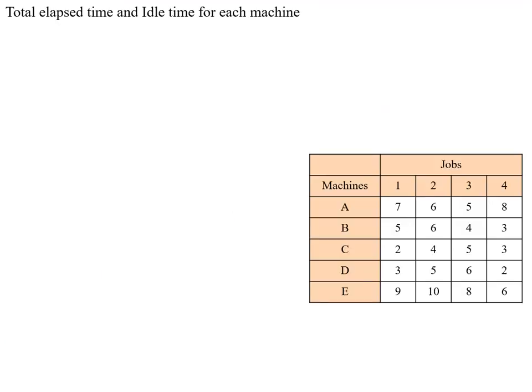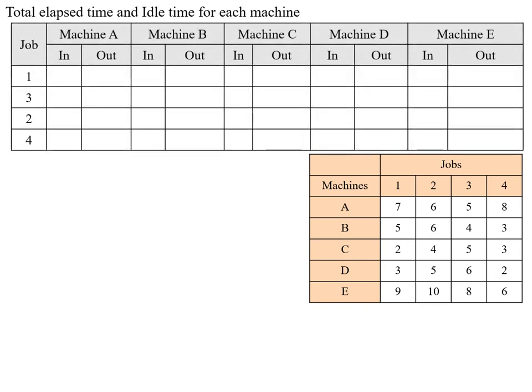The next minimum value is 21 for job 2 on machine G, so we place job 2 after job 3. The optimal sequence is: 1 → 3 → 2 → 4. Next, we find the total elapsed time and idle time for each machine. We draw the table with columns for each machine (A, B, C, D, E), each having an in-time and out-time. In-time represents the time a machine receives the job, and out-time is in-time plus processing time.